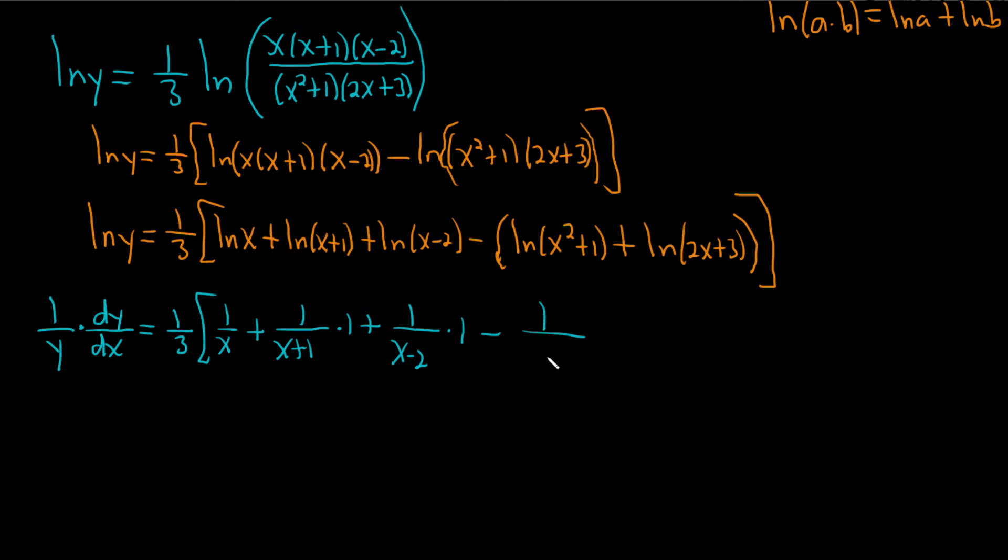Minus 1 over x squared plus 1, times the derivative of the inside, which is 2x, right? Power rule. Look at this. Minus 1 over 2x plus 3 times the derivative of the inside, which is 2 this time. So, wow.